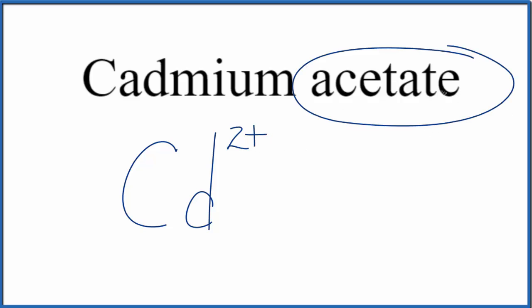Acetate, you're not going to find that on the periodic table. This ATE here, that tells you this is a polyatomic ion. So you have to memorize the acetate ion, or if you're allowed to look it up.